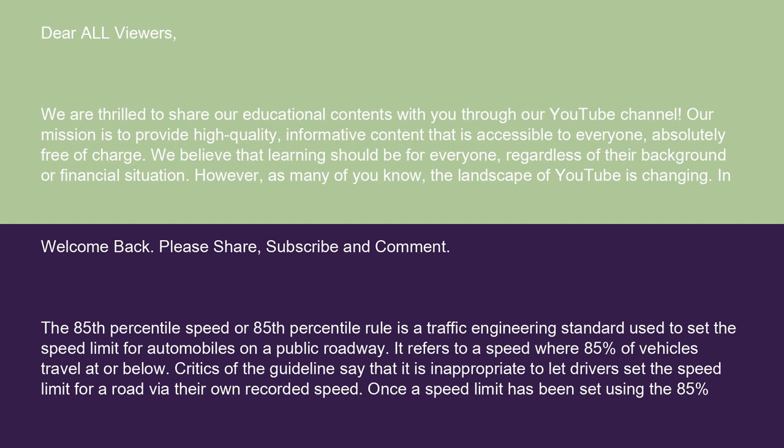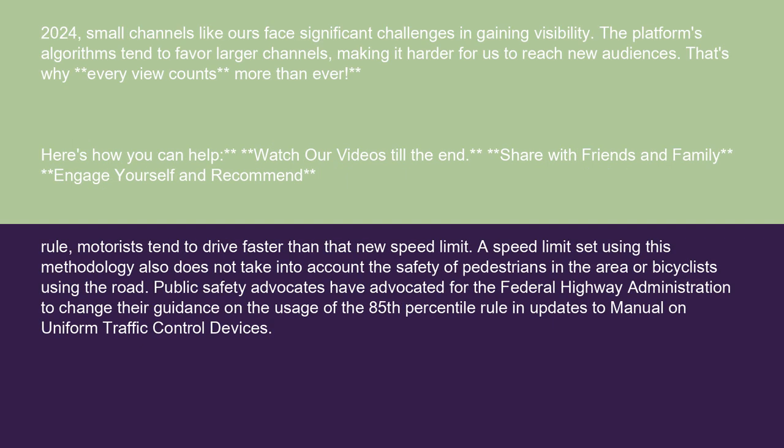Critics of the guidelines say that it is inappropriate to let drivers set the speed limit for a road via their own recorded speed. Once a speed limit has been set using the 85% rule, motorists tend to drive faster than that new speed limit. A speed limit set using this methodology also does not take into account the safety of pedestrians in the area or bicyclists using the road.